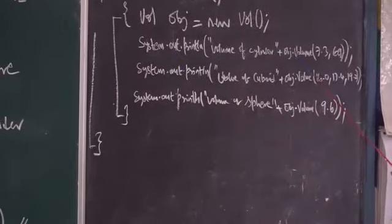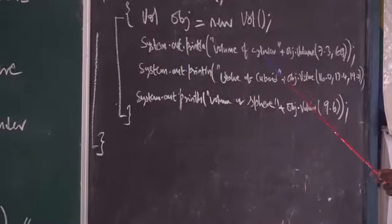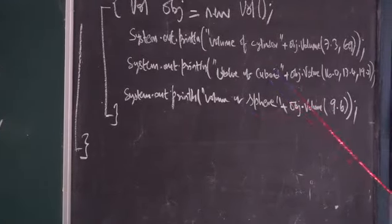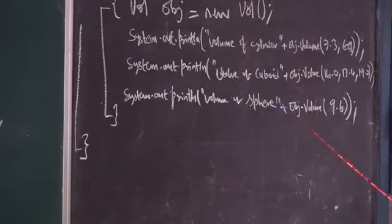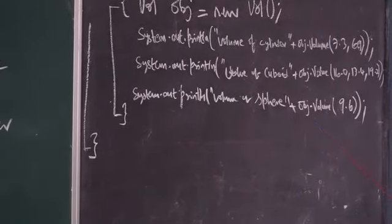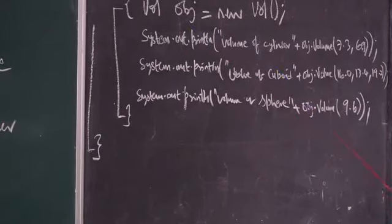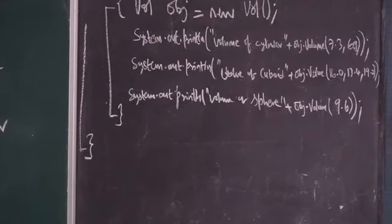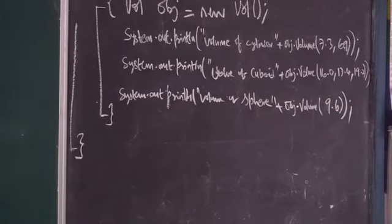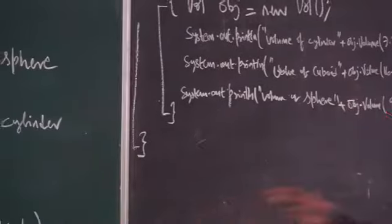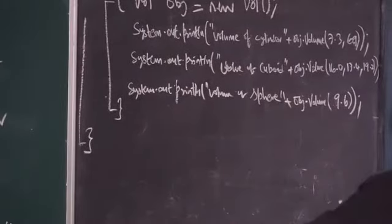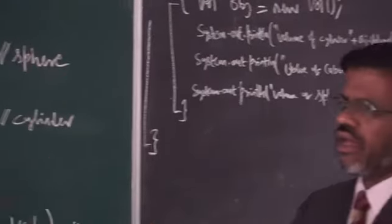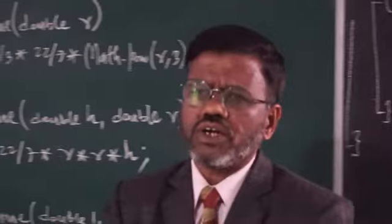What do we do here? The first statement will calculate the volume of the cylinder. The second statement will calculate the volume of a cuboid. And the third statement will calculate the volume of a sphere. From my method I am using this object called as obj. Please see these arguments or the parameters. If it is two arguments, it goes here. If it is one argument, it goes to the third method. If it is three arguments, it goes to the first method. Here is an example of function overloading.